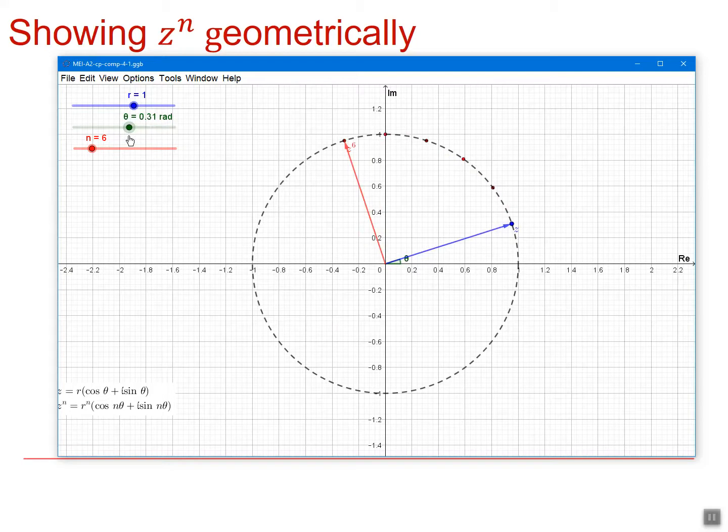If the modulus is greater than 1, then the powers will spiral outwards rather than inwards.